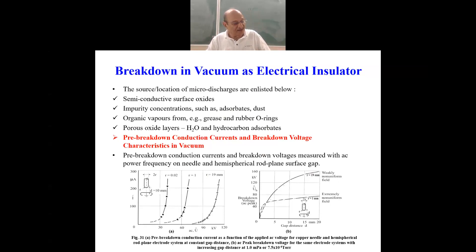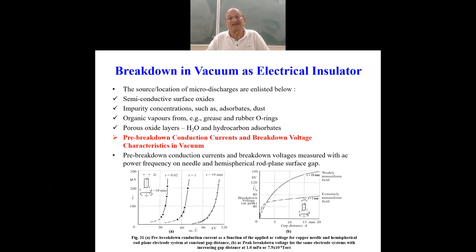Now we would leave behind the breakdown mechanism in atmospheric air and continue for a few minutes with breakdown in vacuum. Vacuum is also an electrical insulator, and in fact it has much, much better electrical insulating properties than atmospheric air. In vacuum, when you evacuate the air, the mean free path of an electron would be very, very large. The mean free path is the distance which the electron travels without making a successful ionization.